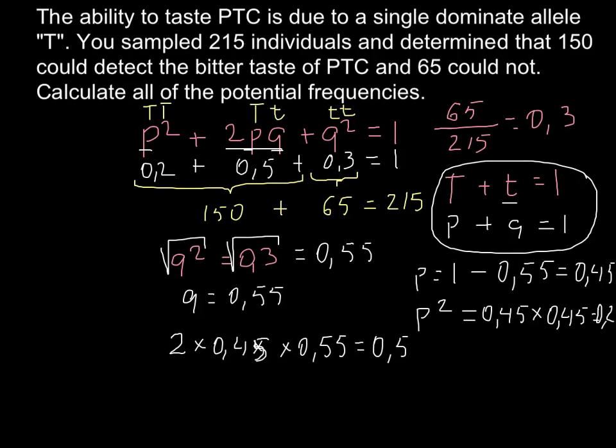So we have, especially here, when we have 150 people who are tasters, we don't know who is homozygous and who is heterozygous. But when we solve it using this Hardy-Weinberg formula, now we know that about 20%, and 0.2 we also can say that this is 20%. We just have to move decimal point two places to the right.